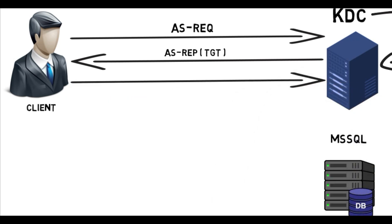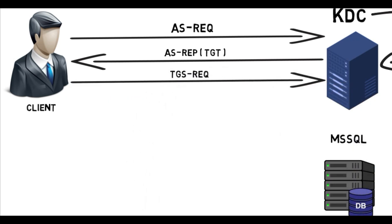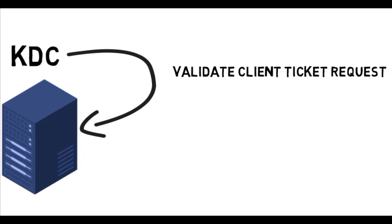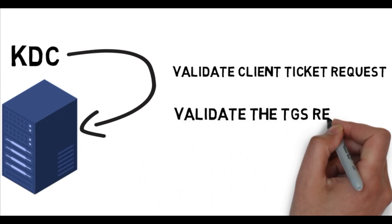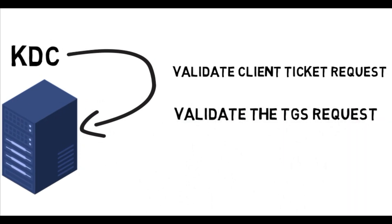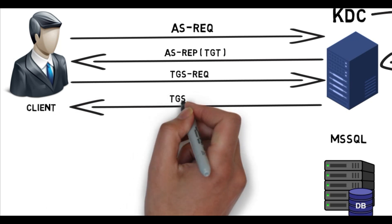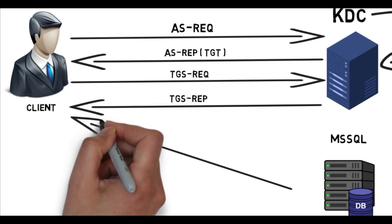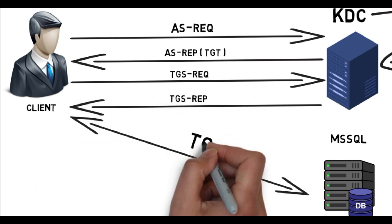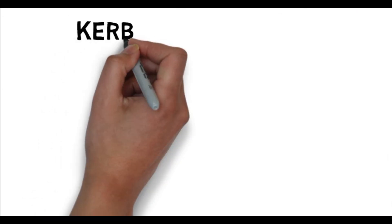If we want to access a service like SMB or MSSQL, the client uses the TGT to request a service ticket via a TGS-REQ from the KDC for the specified service. The KDC responds with the service ticket (TGS-REP), which the client uses to authenticate to the requested service.